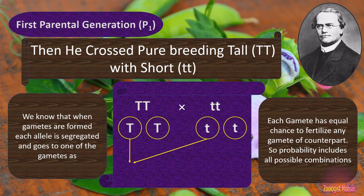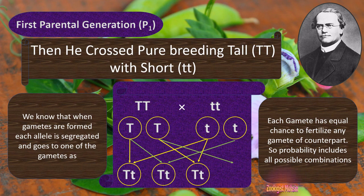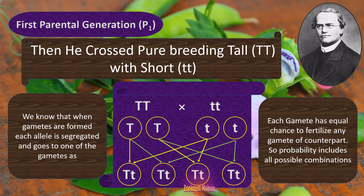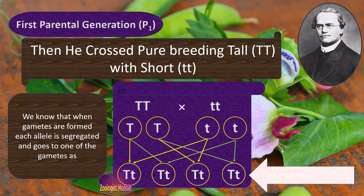Capital T from the first parent can fertilize the first small t of the second parent. Similarly, this capital T can also fertilize the second small t with equal chance. The second capital T can fertilize the first small t, and the second capital T can fertilize the second small t. These are the probable offspring, or probability ratios of the offspring. The generation produced here is the first filial generation, or F1.